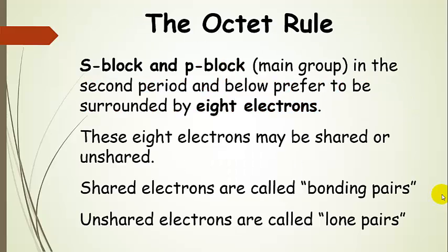The octet rule tells us that s-block and p-block — which is the main group — in the second period and below on the periodic table, prefer to be surrounded by eight electrons, and that eight electrons is a noble gas configuration. These electrons can be shared or unshared. When electrons are shared, we call them bonding pairs — bonding electron pairs. When they're unshared, we call them lone pairs. We're going to see a representation of that soon.